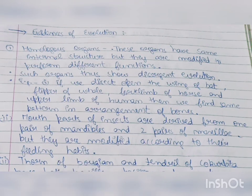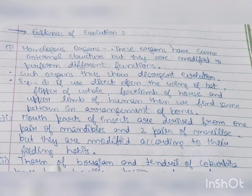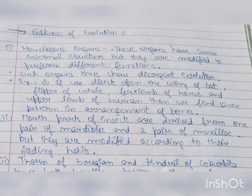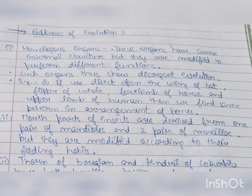A third example: the thorn of Bougainvillea and the tendril of Cucurbita — these are also homologous structures.